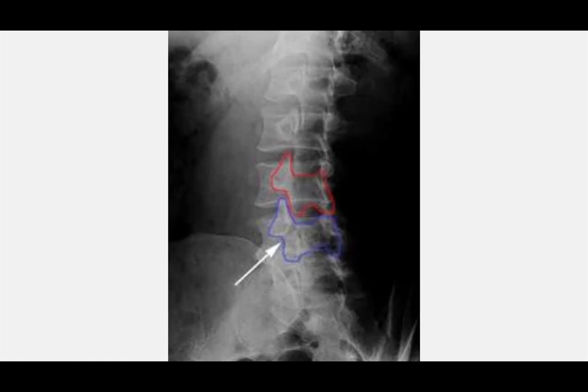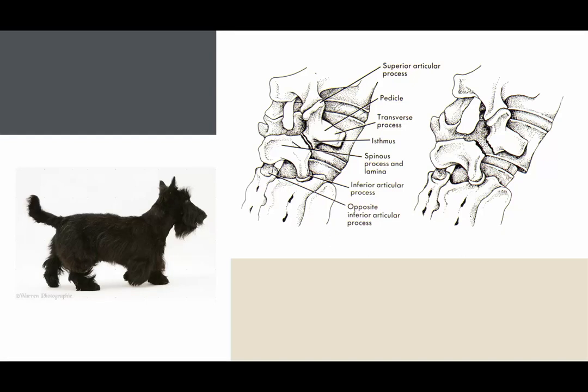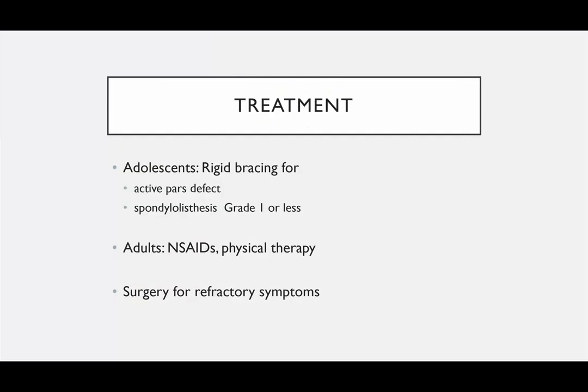On an oblique image of the lumbar spine, you put the pars interarticularis in profile and get shadows that look like a dog — there's the head of the dog and the body of the dog. On that oblique view, if you see a line or a gap, that's how on oblique x-ray you can potentially diagnose both spondylolysis and spondylolisthesis.